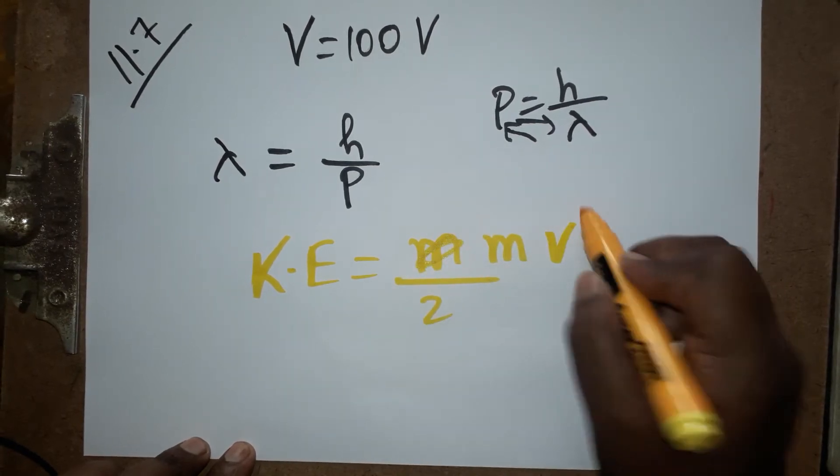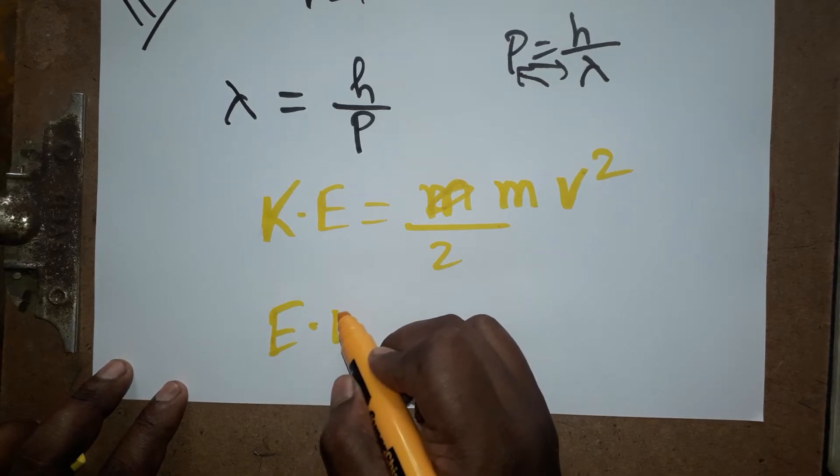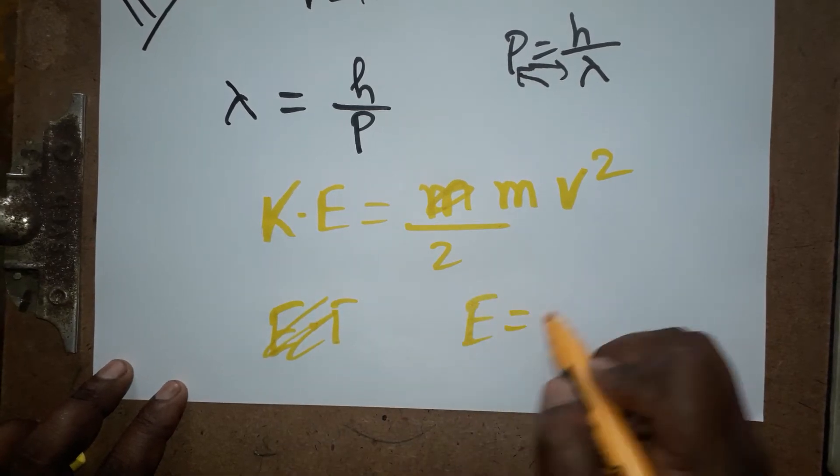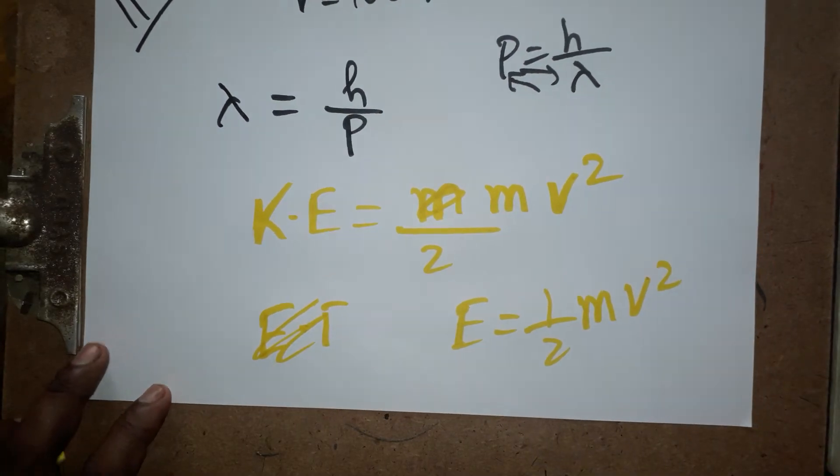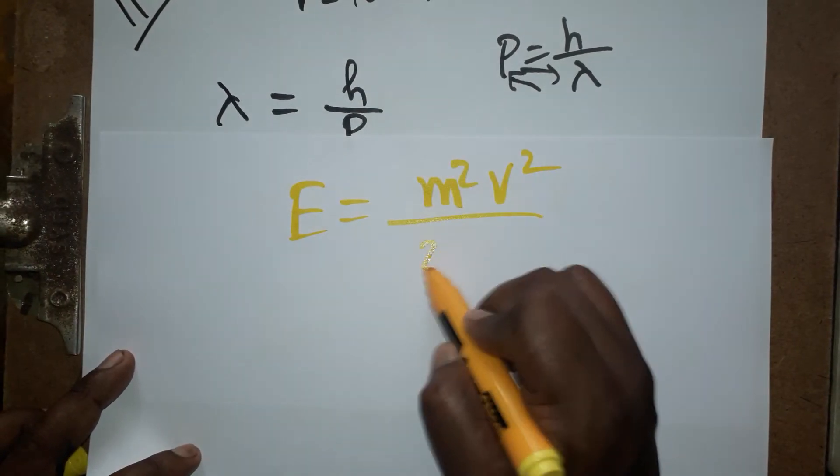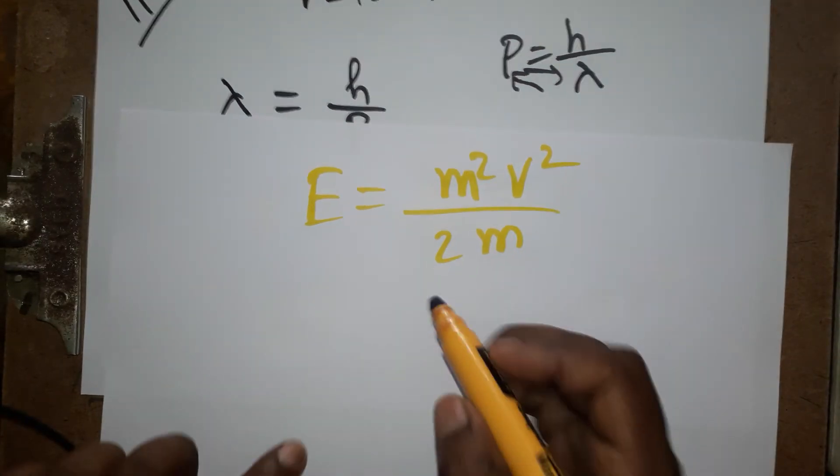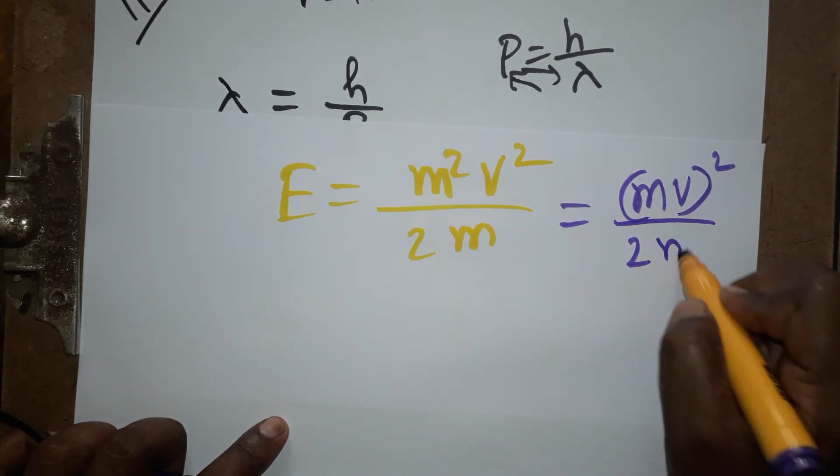Kinetic energy you can write as E. So E is equal to m v square. This same value, numerator m, denominator m I am going to multiply. So mass square velocity square divided by 2 m. This is going to be the whole square, mass into velocity whole square, so mass into velocity whole square divided by 2 m.